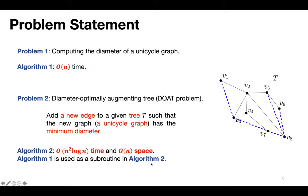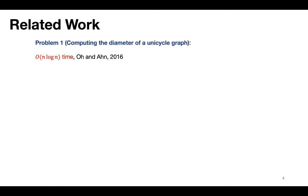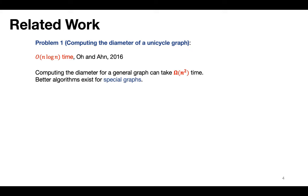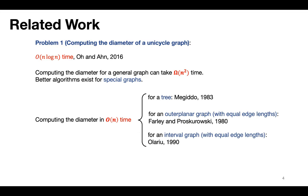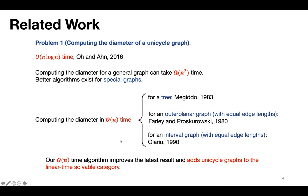Note that Algorithm 1 is used as a subroutine in Algorithm 2. For the first problem — computing the diameter of a unicycle graph — O and N gave an O(n log n) time algorithm in 2016. Computing the diameter for a general graph can take O(n²) time, but better algorithms exist for special graphs such as trees, ultraplanar graphs with equal edge lengths, and interval graphs with equal edge lengths, all solvable in linear time. Our linear time algorithm improves the latest result of O(n log n) and adds unicycle graphs to the linear-time solvable category.